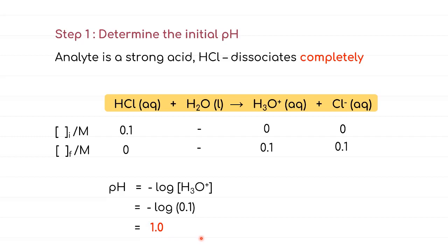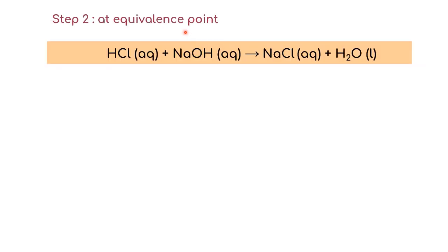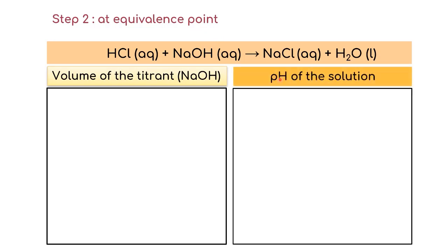We can already plot the first point on the curve: when no titrant has been added (volume = 0), the pH is 1. Moving on to the next step, we need to determine the equivalence point. The salt NaCl will be formed when all the HCl and NaOH have reacted. We need to first check their stoichiometric coefficients.